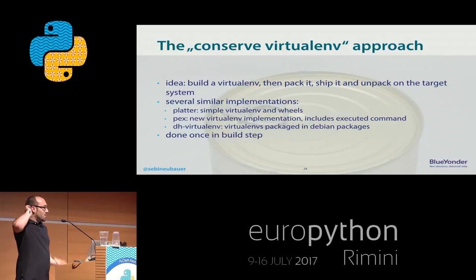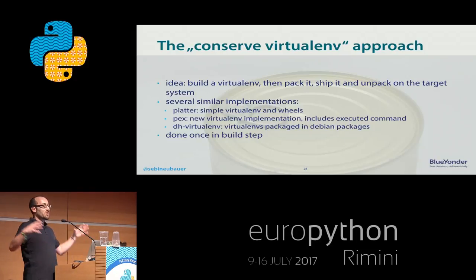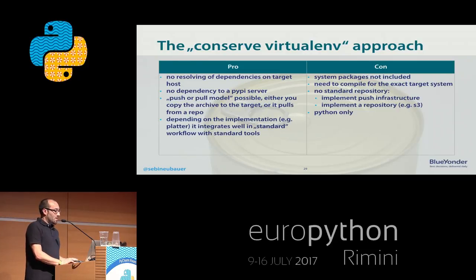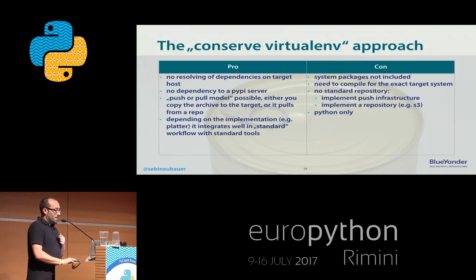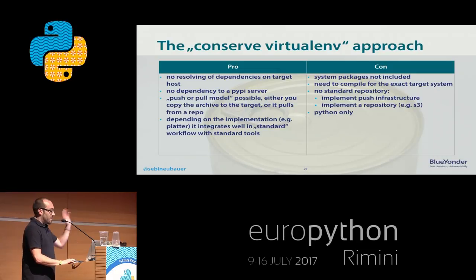Then there is the approach of conserving the virtual environment. There are many implementations — Plutter, Pex, DH-virtualenv. The principle idea is we pack the virtualenv together and ship the whole tar file, then just extract the tar file in production. The biggest pro is we don't have to resolve dependencies on the target system. The cons: we still don't have system dependencies — just the Python dependencies. We still need to have all glibc's in the right version, or NumPy, lxml, whatever.